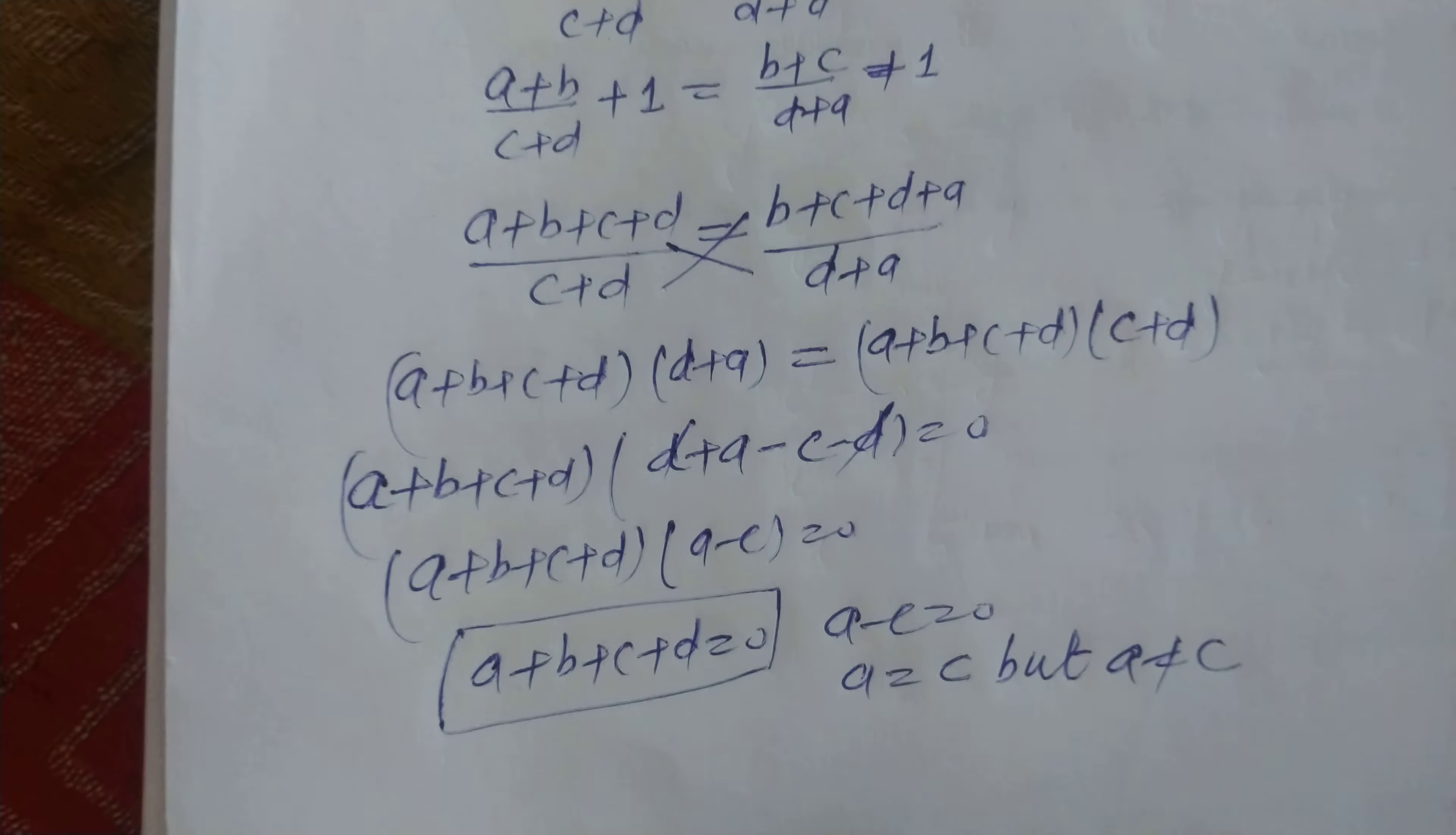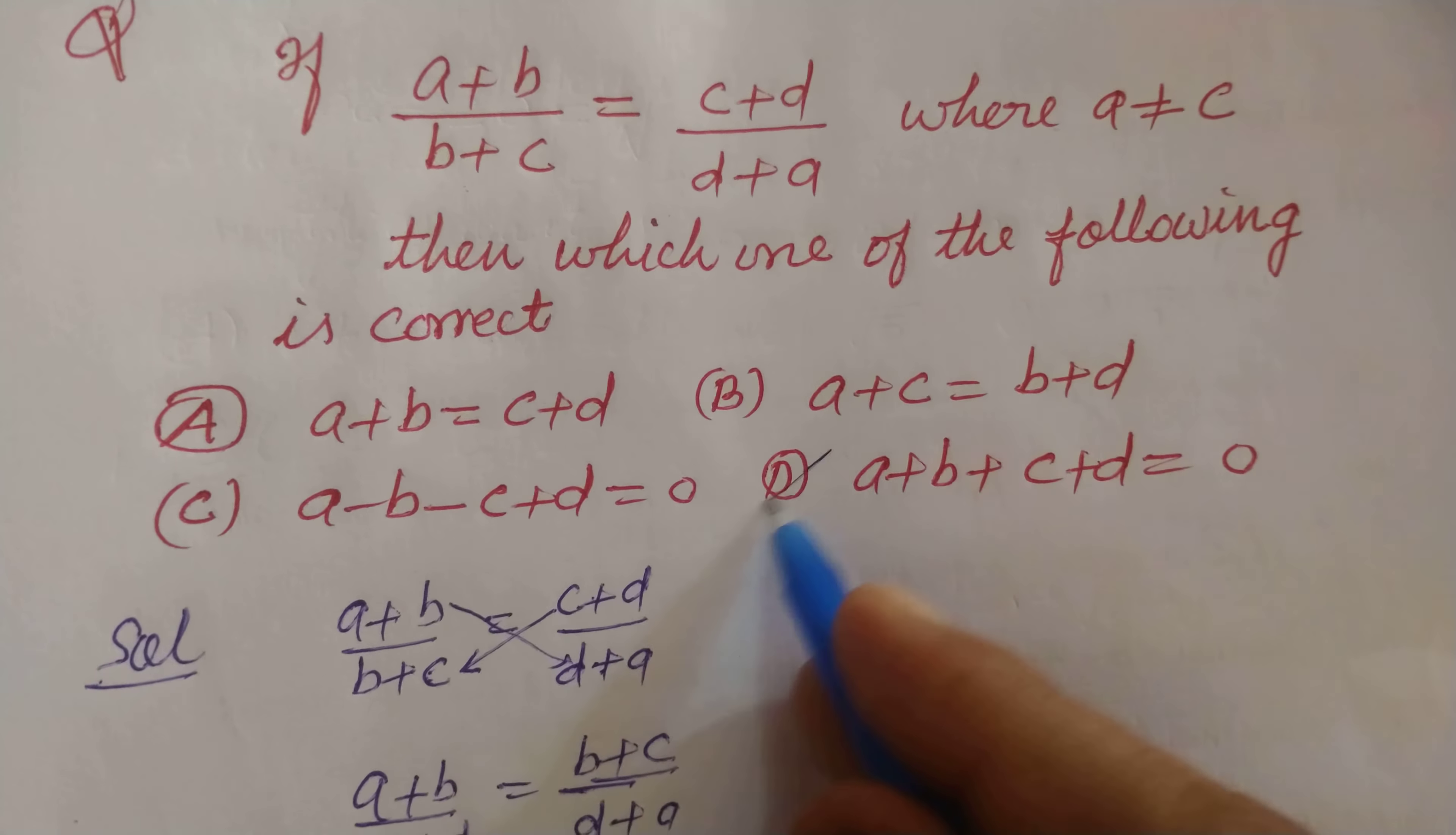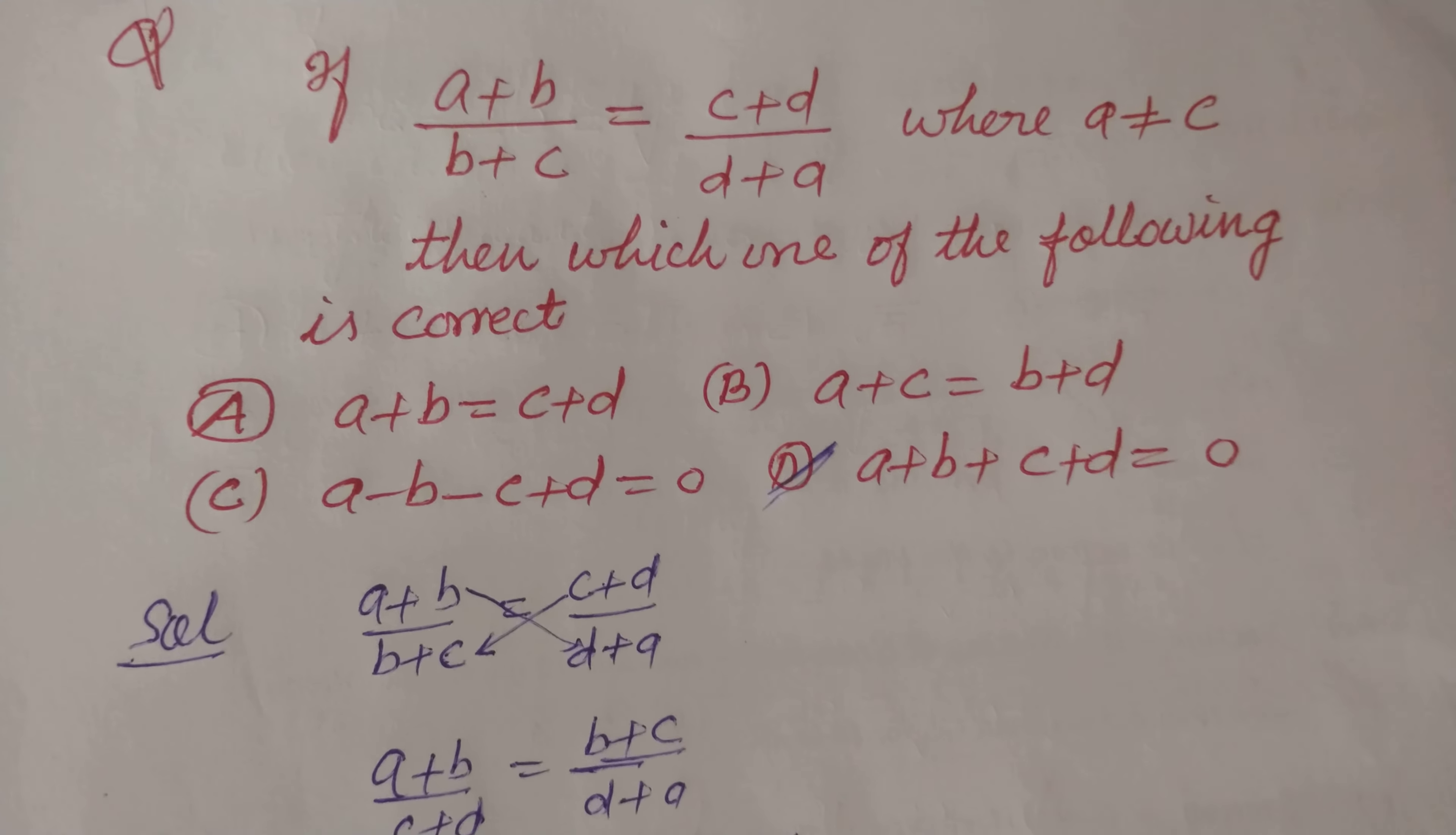A + B + C + D = 0, which is found in option D of this question. So option D is correct.